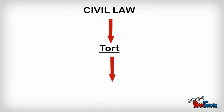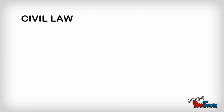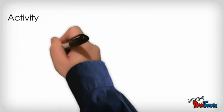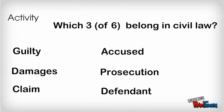Negligence is part of the law of tort, which is one part of the civil law. Civil law is mainly concerned with settling disputes. Civil disputes may involve private individuals, businesses, or the government. Negligence cases are therefore different from criminal cases, which focus on prosecution and punishment by the state for breach of the criminal law. Pause the video and decide which three of the terms listed are used in civil law, then restart to see the answer.